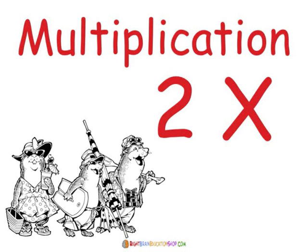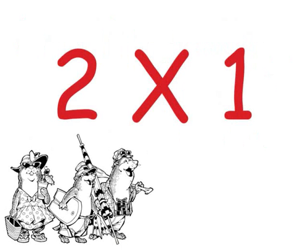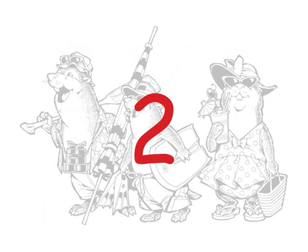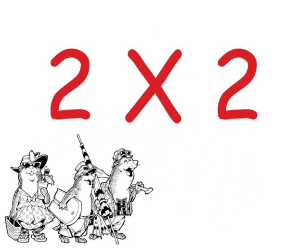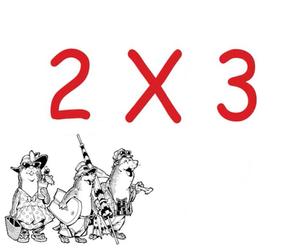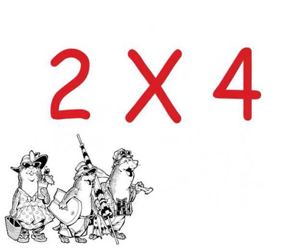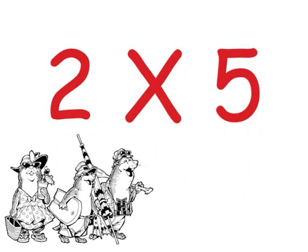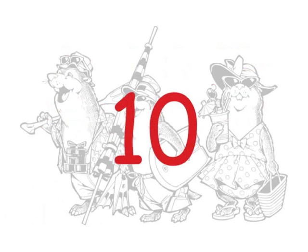Multiplication times 2. 2 times 1 is 2. 2 times 2 is 4. 2 times 3 is 6. 2 times 4 is 8. 2 times 5 is 10.